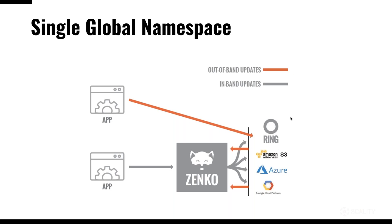The idea is for Zenko to manage a single global namespace for all the data you choose to manage. There are multiple ways data can become part of Zenko. The obvious way is to push data through Zenko's endpoints via HTTP PUT — it stores data wherever that bucket is configured. On a per-object basis, you can use the location field to push data to a very specific location for only certain objects. A second way is to push data from your applications directly to any platform and do out-of-band updates to add the data into the Zenko platform via cloud notification tools. So in-band or out-of-band updates, but a global namespace across everything.